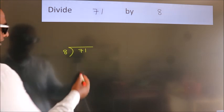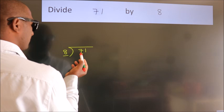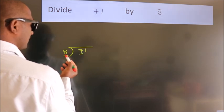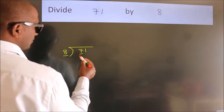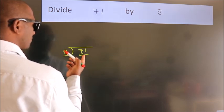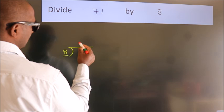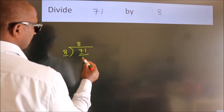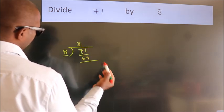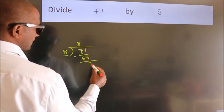Next, here we have 7, here 8. 7 is smaller than 8, so we should take two numbers: 71. A number close to 71 in the 8 table is 8 times 8, 64. Now we should subtract. We get 7.